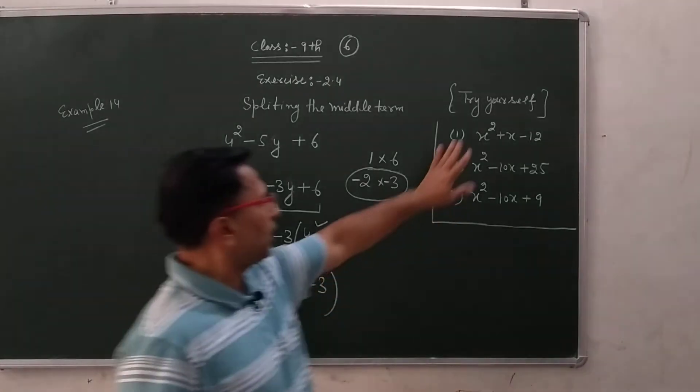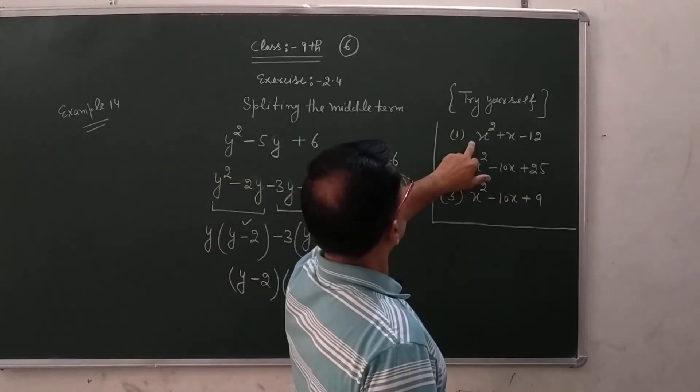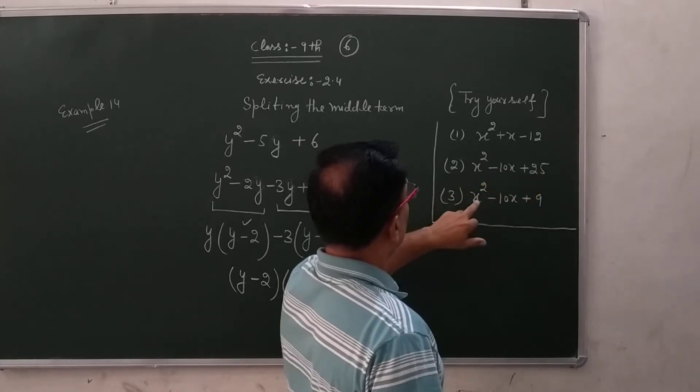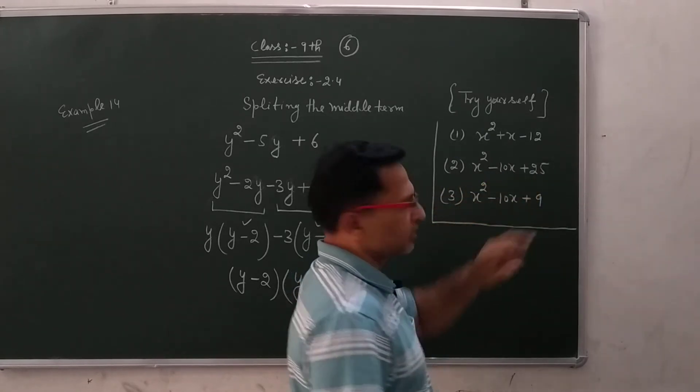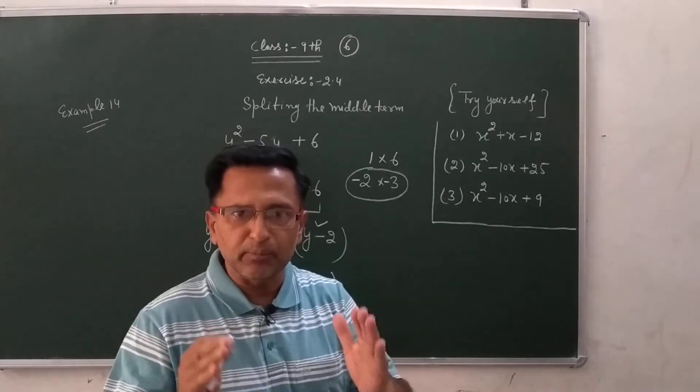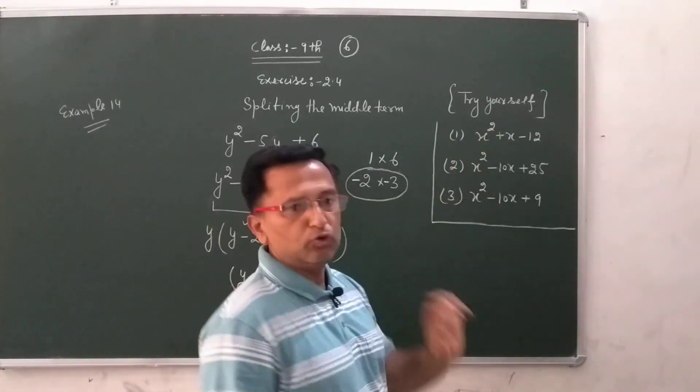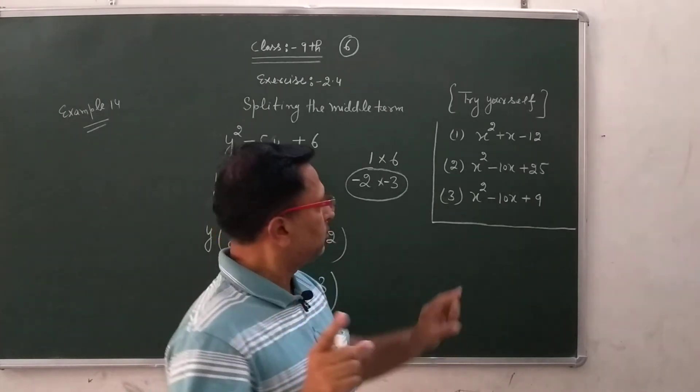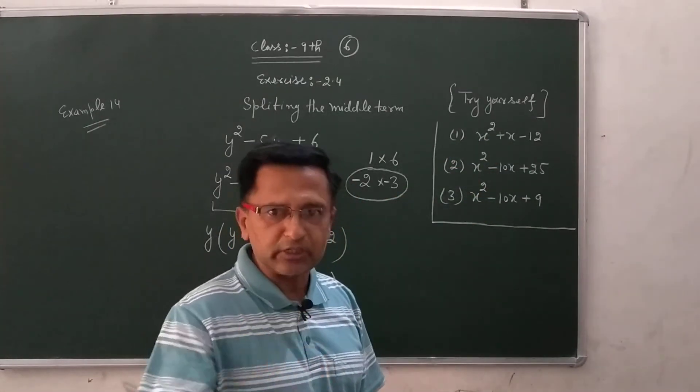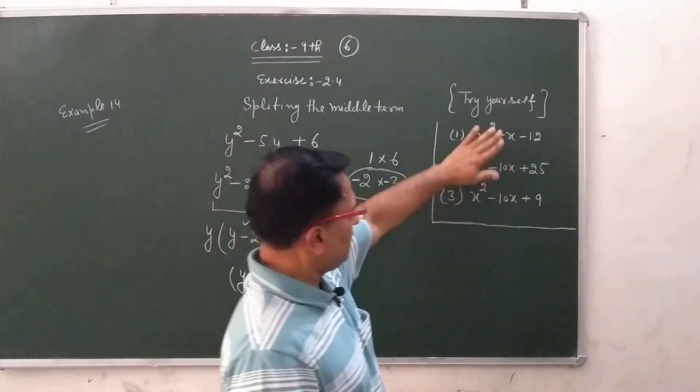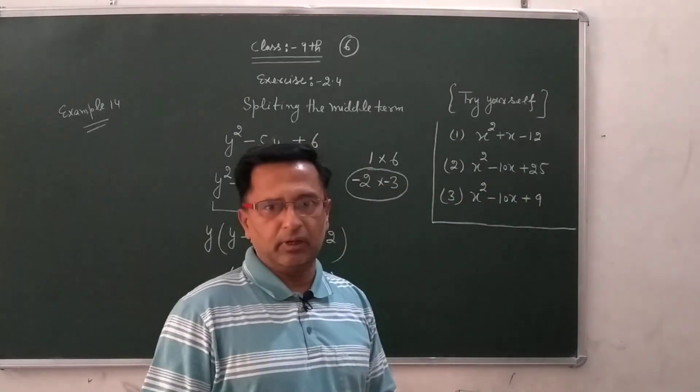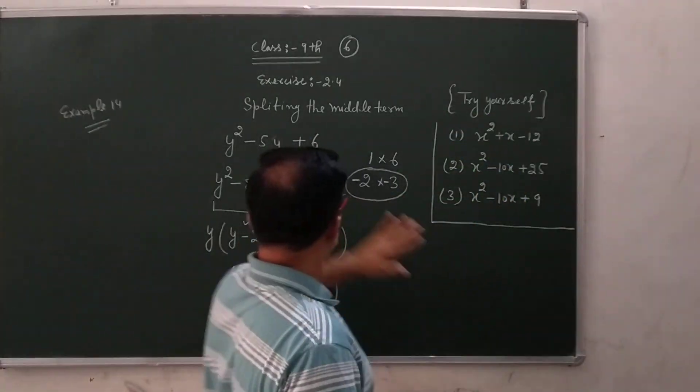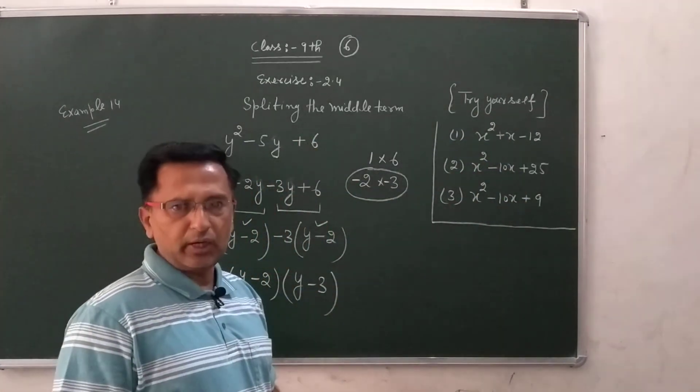So now you try yourself these three questions: x square plus x minus 12, x square minus 10x plus 25, x square minus 10x plus 9, by the splitting middle term. And please you care, you fully take care about their symbols. So please you try yourself like this question, okay, thanks.